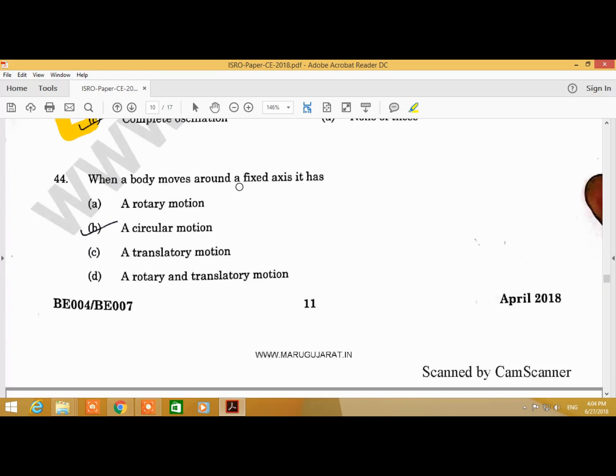Question Number 44: When a body moves around a fixed axis, it has. Answer is B, a circular motion.